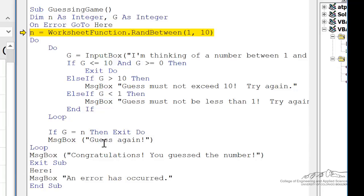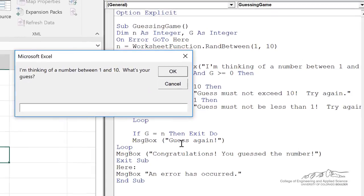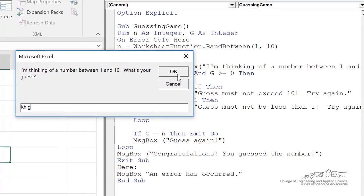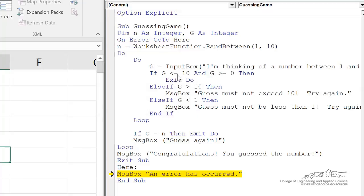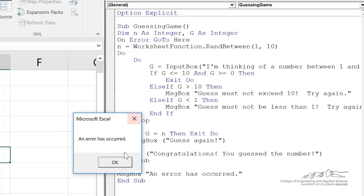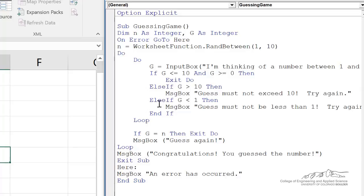So now when we run this, I can put in something that doesn't make sense, like a string or something. And you see that it bumps down, and it says an error has occurred. Now, it's not more specific than that, it just tells them that an error has occurred.